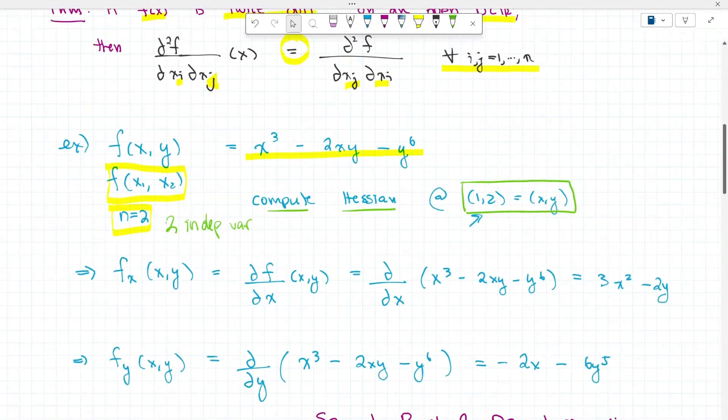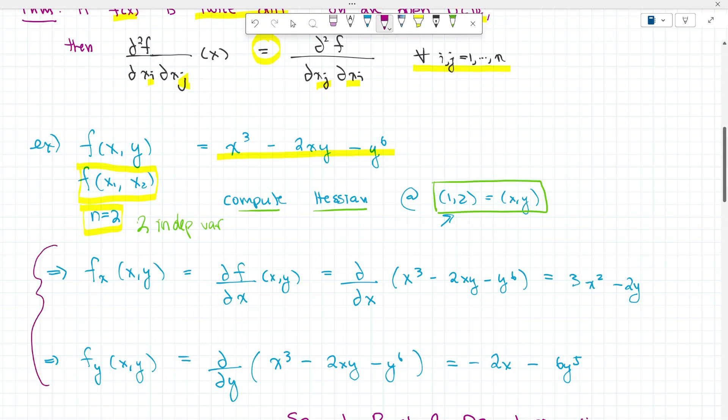Here are our first partial derivatives. We'll start with taking it with respect to x, which means we're letting y stay constant. There's a few different notations. We can do f_x or we can use Leibniz notation ∂f/∂x. That means we're taking the partial derivative of the function with respect to x. This one here that I'm highlighting is our function f of x.